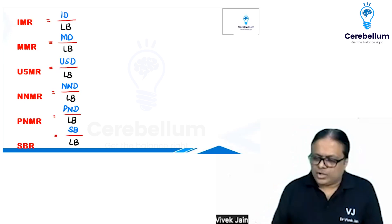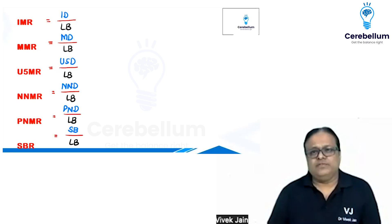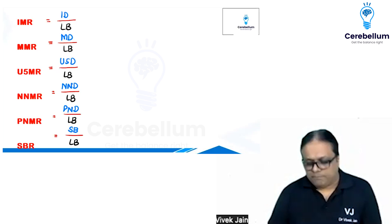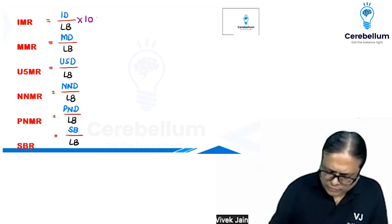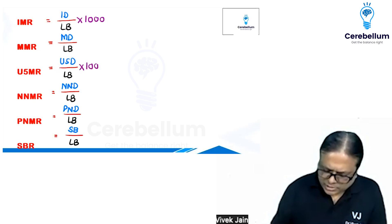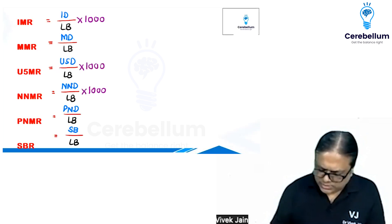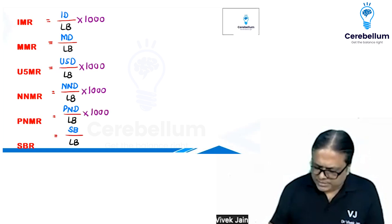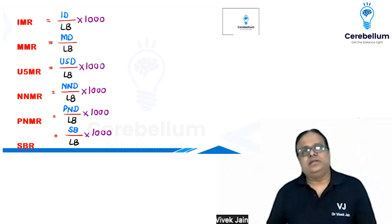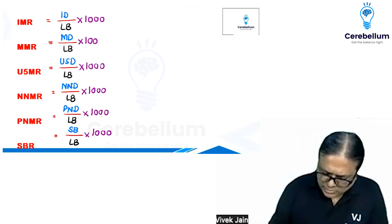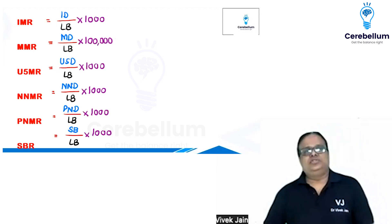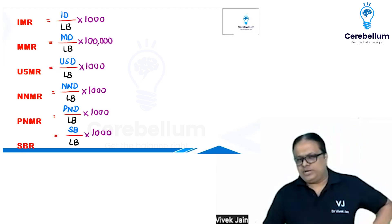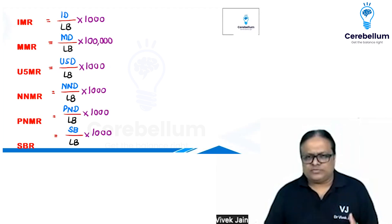Do all six have the same multiplier? No — one of them has a different multiplier. MMR has a different multiplier. IMR, U5MR, NNMR, PNMR, and SBR all have a multiplier of 1000. But maternal mortality ratio — MMR — is a ratio and has one lakh as the multiplier. So live birth is the common denominator, and 1000 is the common multiplier except for MMR which uses one lakh.